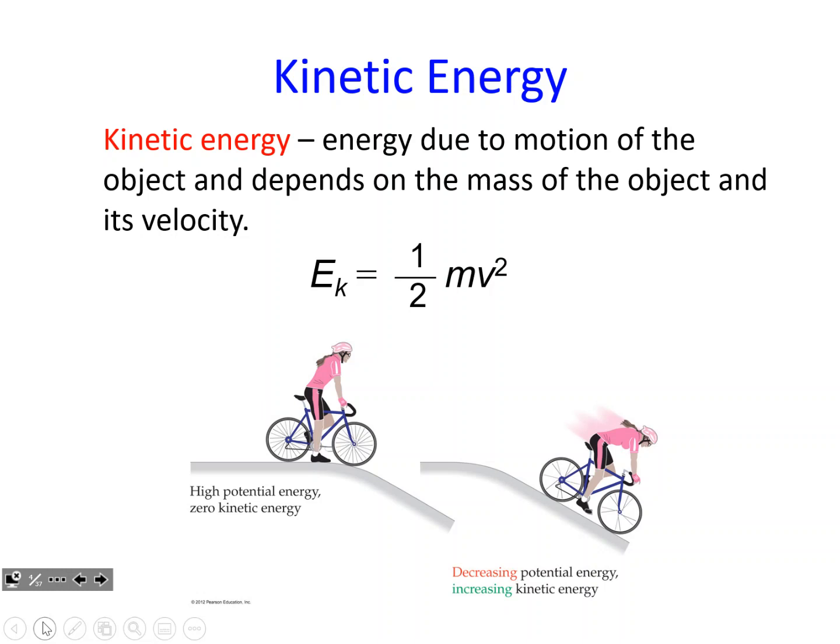Kinetic energy is the energy of moving particles — energy due to motion of an object — and depends on the mass of the object and its velocity. The equation to calculate kinetic energy is one-half mv squared, where m is mass and v is velocity. This is mainly a physics equation, but we discuss it when we get to gas laws when comparing different gases with different masses. If they're at the same temperature, they have the same average kinetic energy.